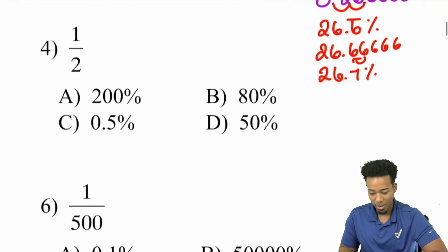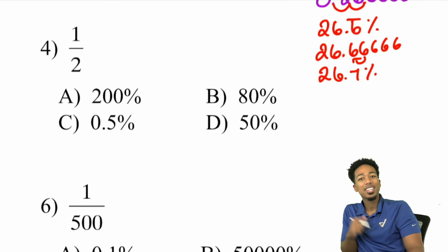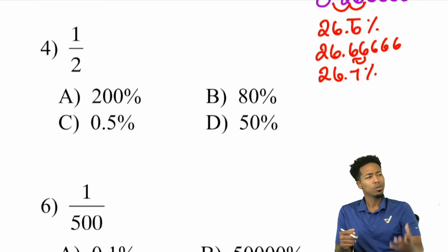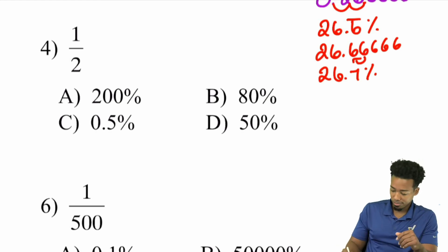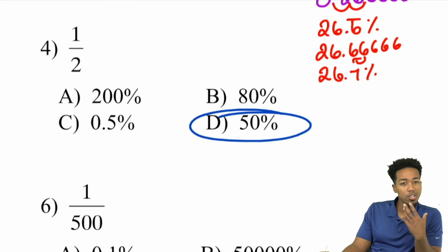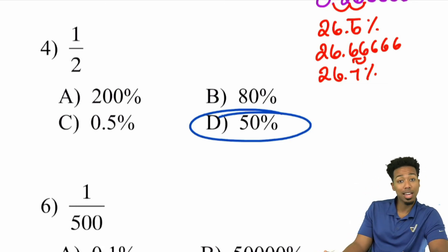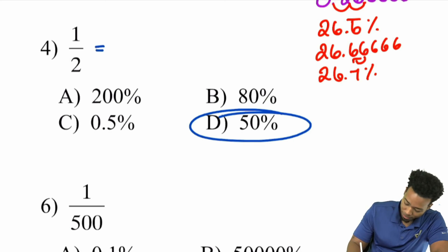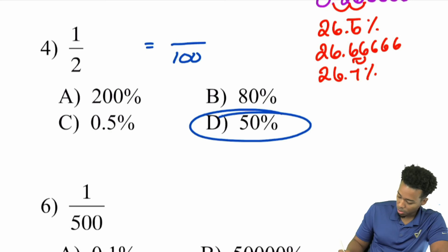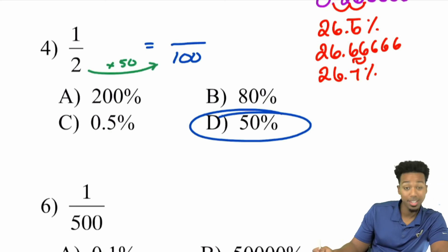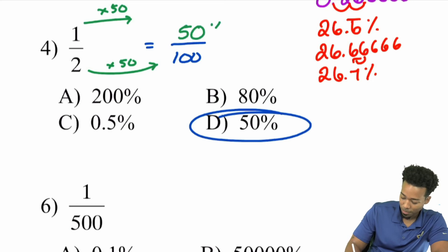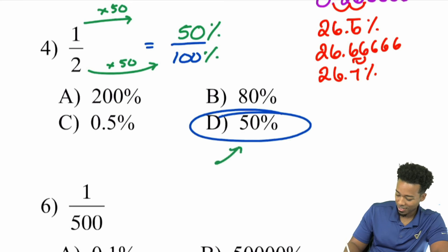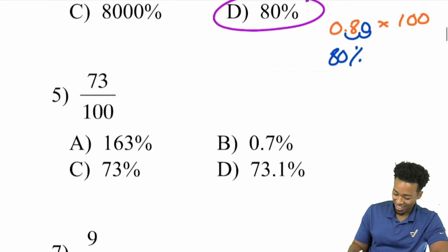Number four: 1/2 as a percent. You can ask yourself what's half of 100% — that's 50%. Or using method one: 2 times 50 is 100, so multiply the top by 50 as well — 1 times 50 is 50 — giving 50 over 100, which is 50%.